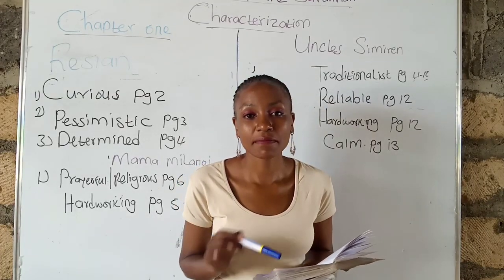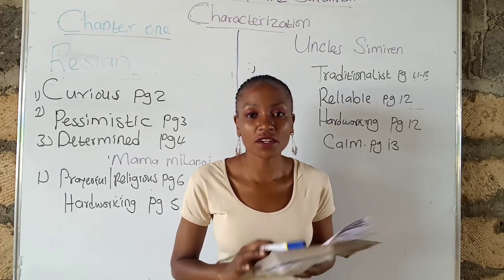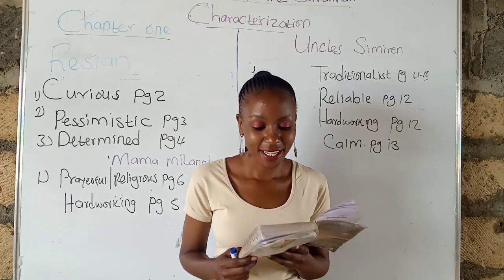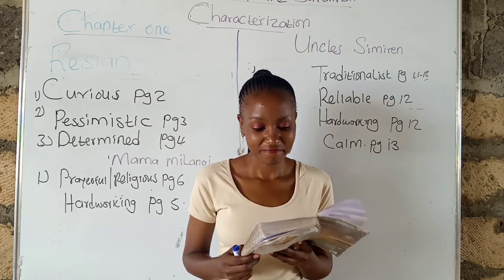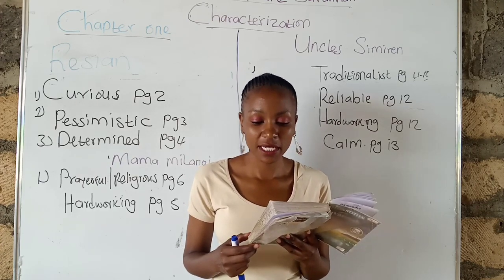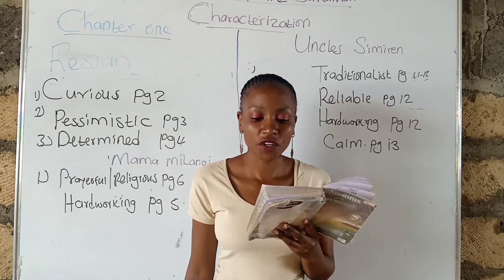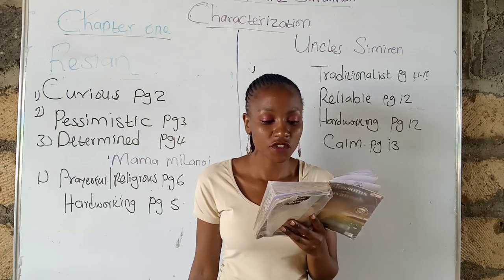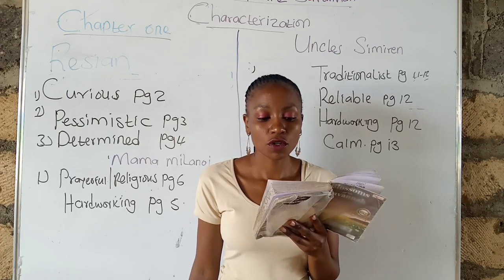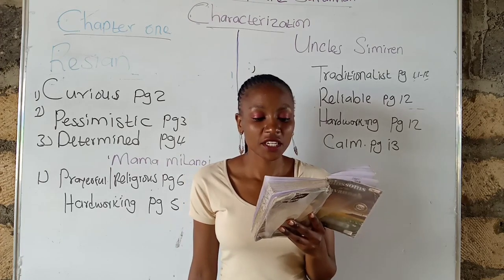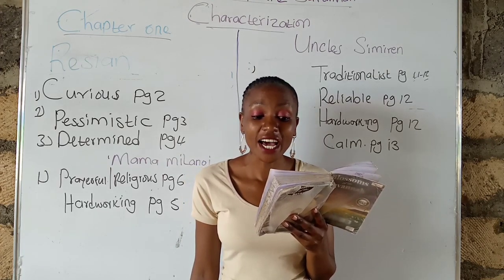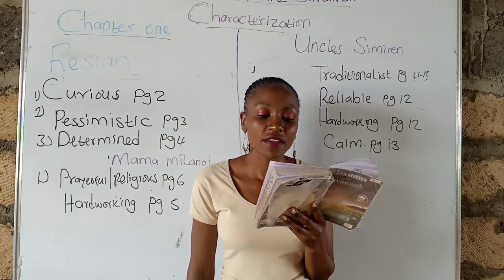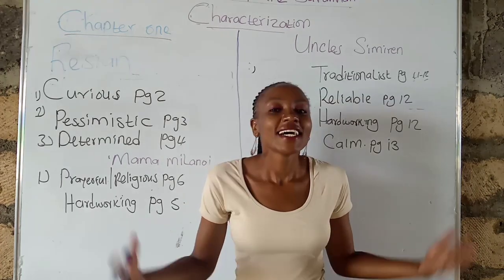Lastly, Uncle Simiren is calm. That is on page thirteen. When Ole Kyalo called the elders megalomaniacs, Uncle Simiren did not argue with him — he let matters take their own course. Page thirteen, first paragraph: 'Simiren had got angry and called the clan elders megalomaniacs who were still trapped in archaic traditions that were better buried and forgotten. Simiren did not agree with him then and nor would he do so now — he would rather have matters take their own course.'